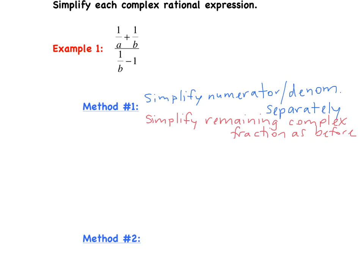Let's focus on our numerator: 1 over A plus 1 over B. Remember when we were adding and subtracting fractions, we needed common denominators. The LCD of these denominators is A times B. So we multiply the first fraction by B over B, and the second one by A over A. That gives us B over AB plus A over AB. When we add those together, we have (B plus A) over AB as our new numerator.